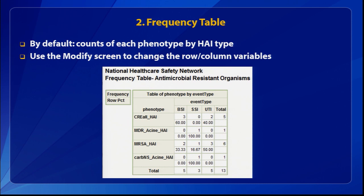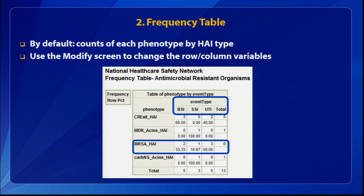The second option is the frequency table. By default it shows the counts of each phenotype by the different event types. The column variable is event type — one column for bloodstream infections, one for SSI, one for UTI. The row variables are the different phenotypes. Here we only have four rows, meaning the hospital has only reported these four resistance profiles. For MRSA, this facility had two bloodstream infections, one SSI, and three urinary tract infections, for a total of six. This frequency table gives you a high-level picture of resistant organisms stratified by the different HAI types.